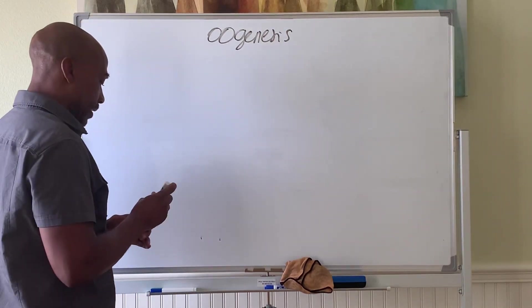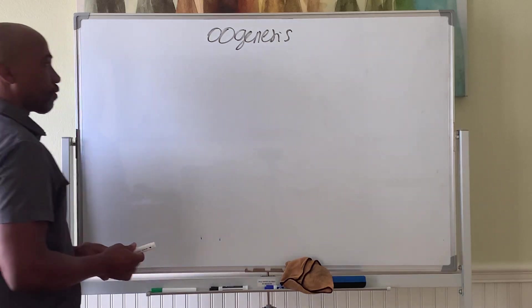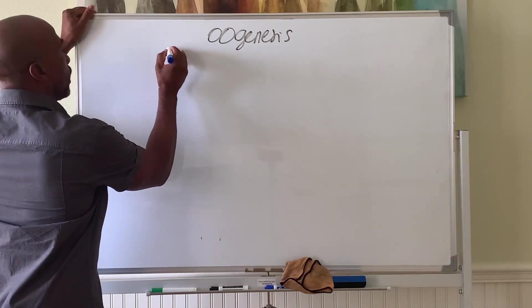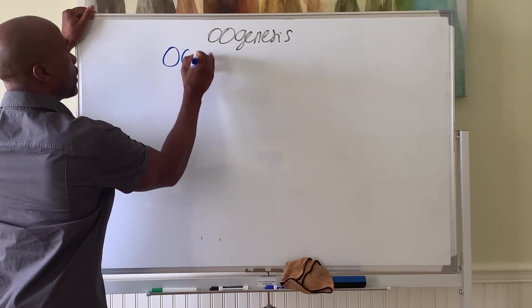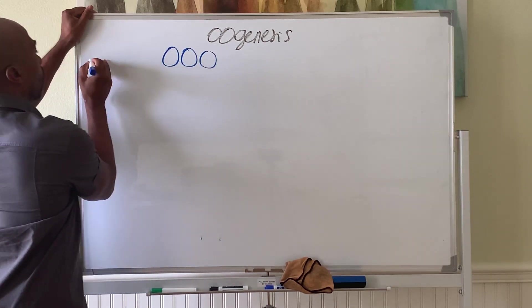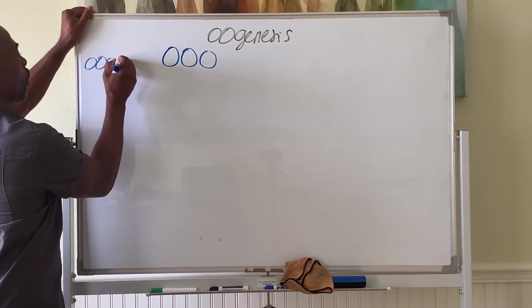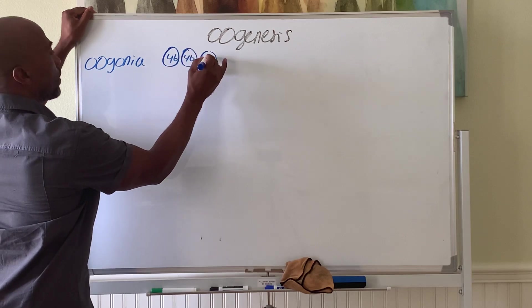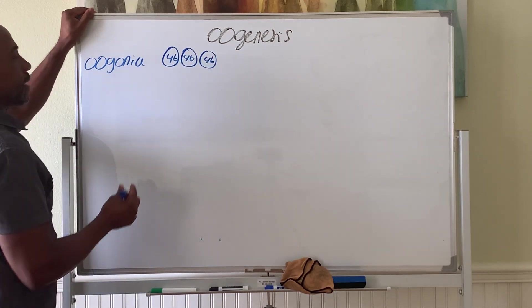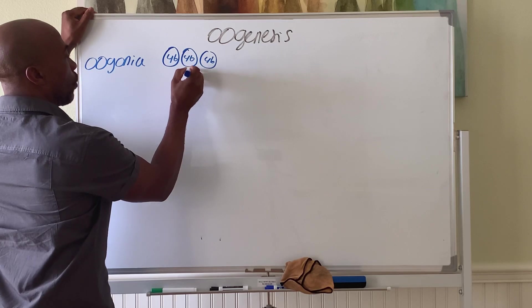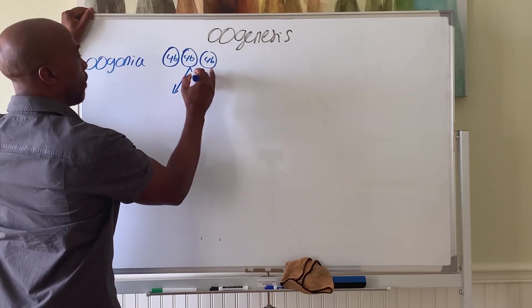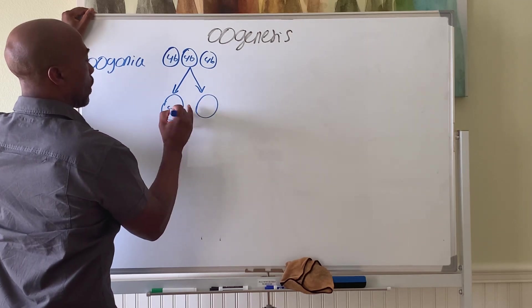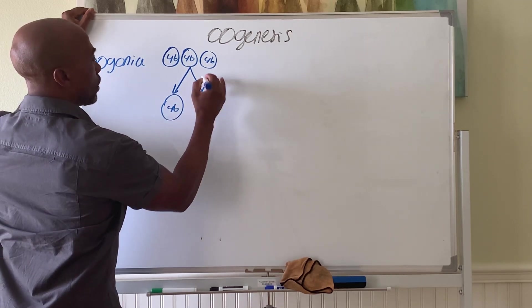Similarly as in the male, we have the same process of going through mitosis and meiosis. Initially, you have germ cells called oogonia. These are the 46, of course. Then these cells, let's pick one, will undergo mitosis.